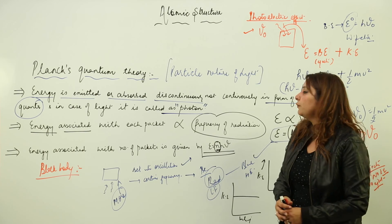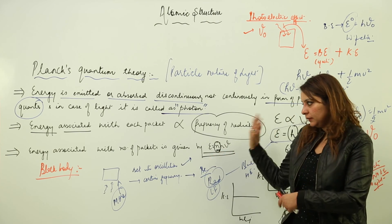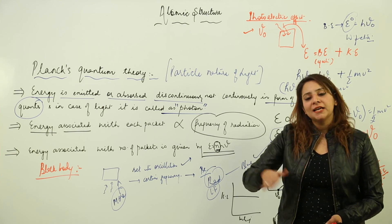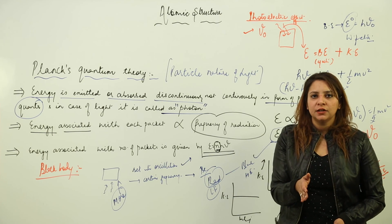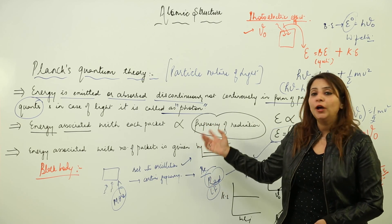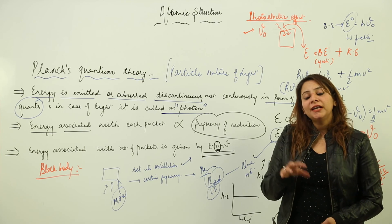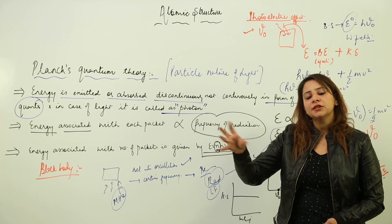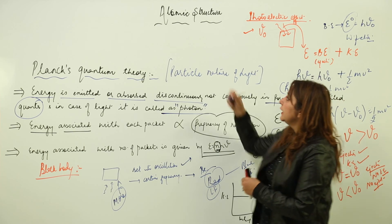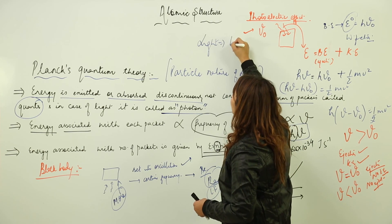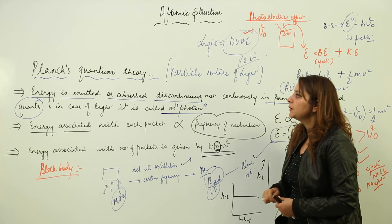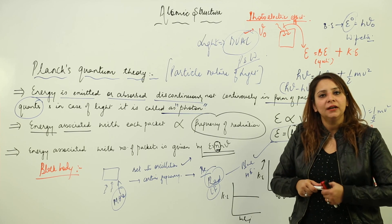This is the photoelectric effect and black body radiation explained on the basis of Planck's quantum theory, indicating the particle nature of light. Studying all this led to the conclusion that light actually possesses a dual character — it has wave-like character as well as particle-like character. We cannot neglect electromagnetic wave theory completely, nor can we apply Planck's quantum theory everywhere. At certain instances light behaves as a wave, and in others as a particle — light has a dual nature.